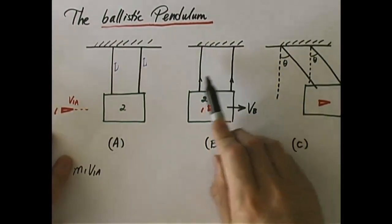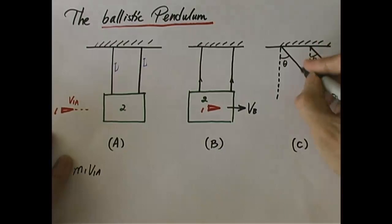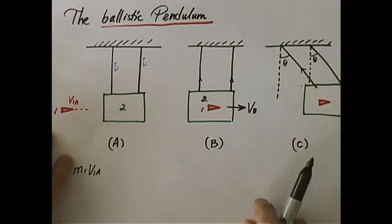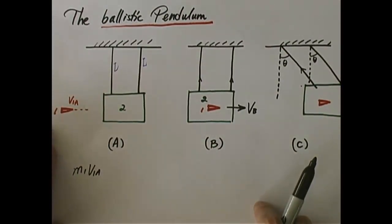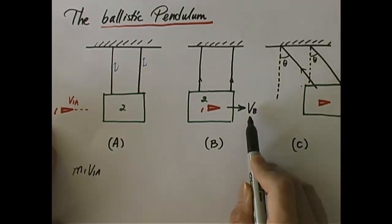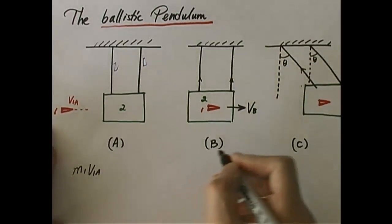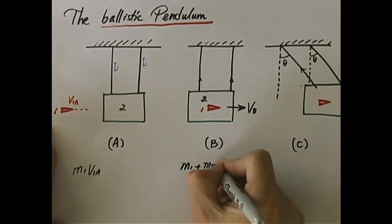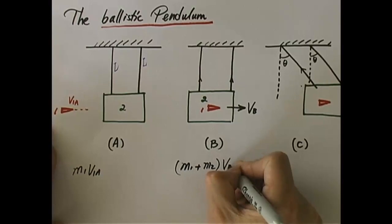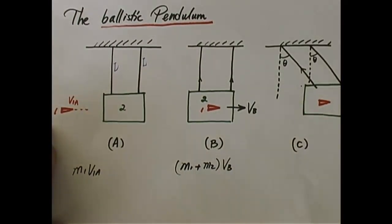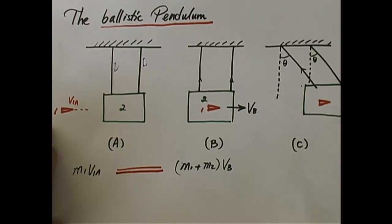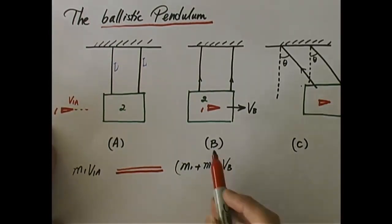Once the strings start to swing, the tension has a horizontal component — that's external, and we lose conservation of momentum. But for the brief moment of the collision, the strings remain vertical, so I can use conservation of momentum. That allows me to figure out VB, the common velocity of bullet and block right after the collision. The momentum equation is: m1·V1A = (m1 + m2)·VB.